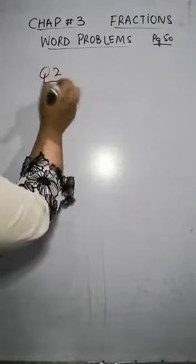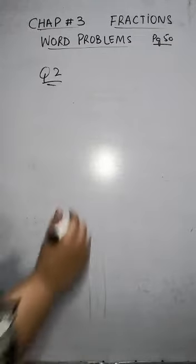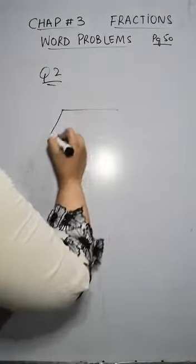Question number two is: if the geography textbook for class five is four over five or four-fifths centimeter thick, how high will be a pile of nine such books? The textbook is your geography book for class five. If we are making a book...